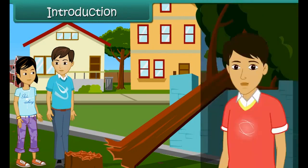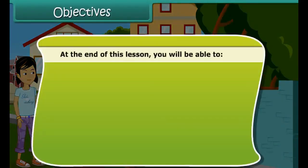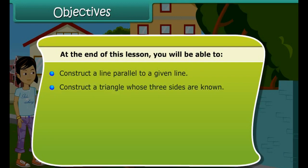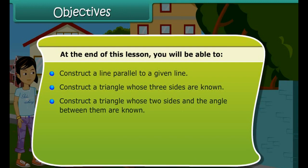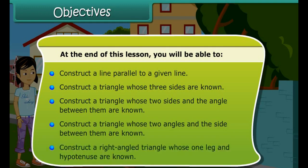In this lesson, you will learn to construct triangles. Objectives: At the end of this lesson, you'll be able to construct a line parallel to a given line, construct a triangle whose three sides are known, construct a triangle whose two sides and the angle between them are known, construct a triangle whose two angles and the side between them are known, construct a right angled triangle whose one leg and hypotenuse are known.